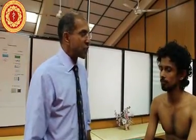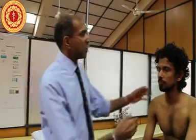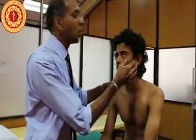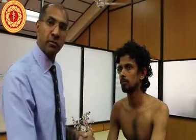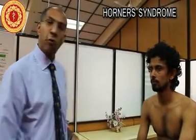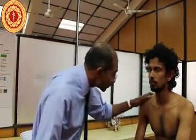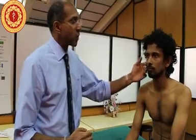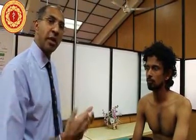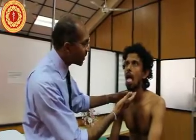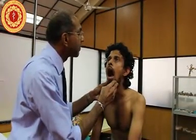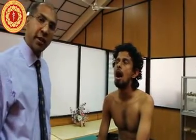Next we look at his face, starting by checking for anemia — one side is enough. Then we look for evidence of Horner's syndrome: the four signs are enophthalmos, ptosis, a narrow palpebral fissure, miosis — look at the size of the pupil — and loss of sweating on one side of the face. Finally, we look for central cyanosis by looking under the tongue, and that looks perfectly normal.